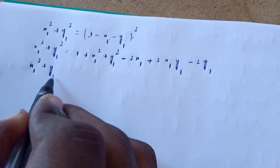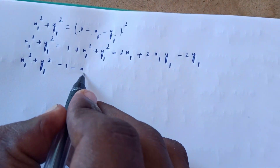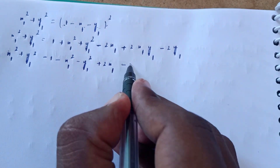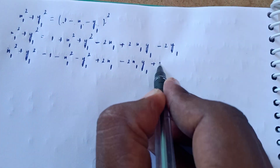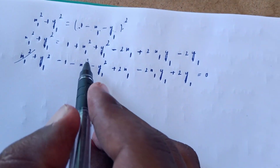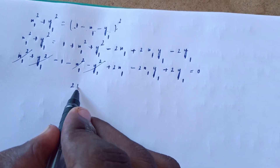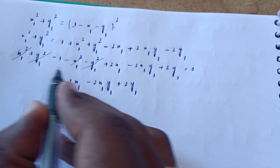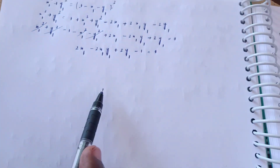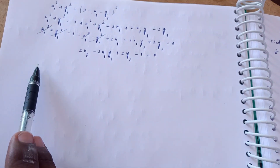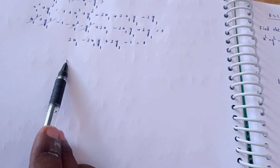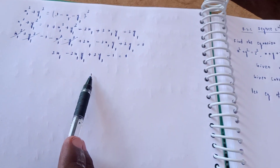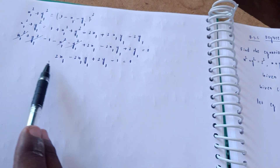After simplification, the x1² and y1² terms cancel, yielding: -2x1 - 2y1 + 2x1·y1 + 1 = 0. This is the required cylinder equation. The general second-degree equation of a cylinder is x² + y² + z² + 2ux + 2vy + 2wz + 2fyz + 2gzx + 2hxy + d = 0.